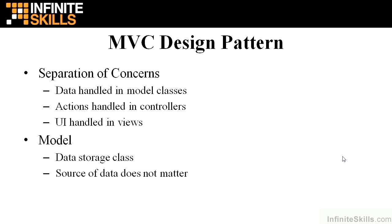The controller doesn't really know what the source of the data is, and certainly the view doesn't know either. This is one of the great things about the separation of concerns — the classes that comprise one part of the MVC design pattern don't have to know anything about the model or the view, so they can be written essentially independently. The models and views can change, but as long as their interfaces do not, the controller doesn't mind. You can change your views dramatically, but the controller and the model don't have to change a bit, making really supportable, maintainable code.